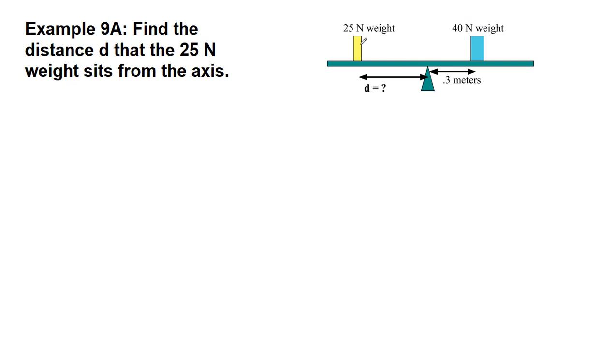So in this example, we have two blocks that are on either side of a fulcrum, a pivot point that is balancing this beam. Now in this chapter, if we think about our regular problem solving process, the first step is to draw a picture and the second step is to list the given information.